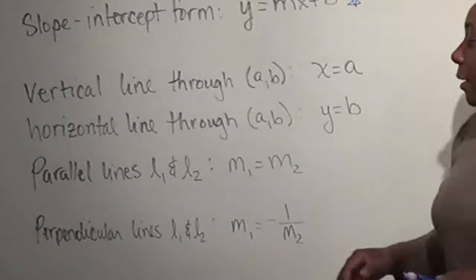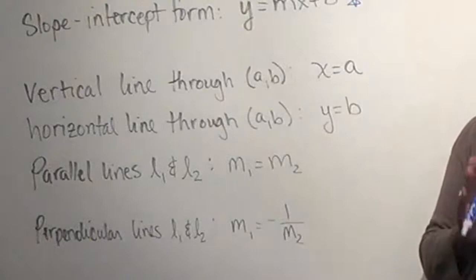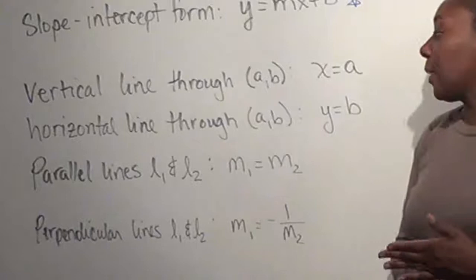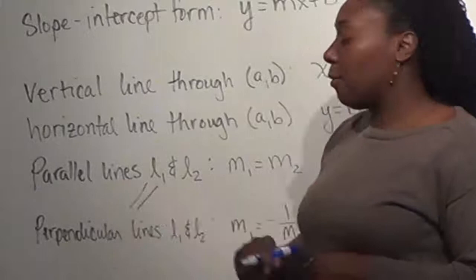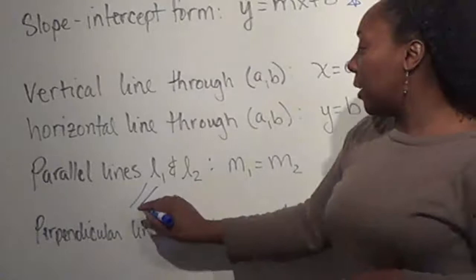The last two forms look at relationships between lines. We have three different situations: two lines that never intersect, two lines that intersect at a point, or two lines that intersect at exactly right angles. If they never intersect, we're looking at parallel lines. If two lines l₁ and l₂ are parallel, then their slopes must be the same — the rise and the run must be exactly the same for both.